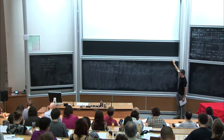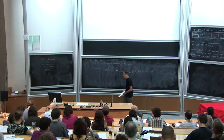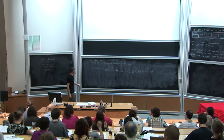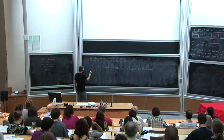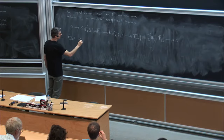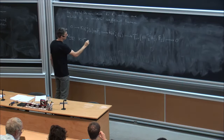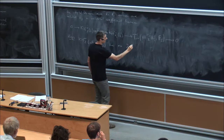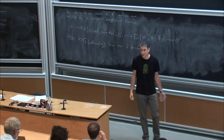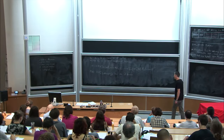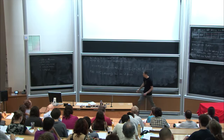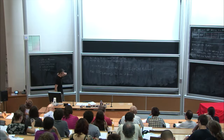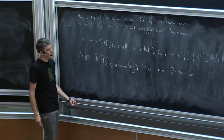One result worth stating is that the reduced integral Khovanov homology of alternating links doesn't have any 2-torsion. I say that to hammer home the point that having a lot of 2-torsion is really a phenomenon of the unreduced theory rather than the reduced theory. The unreduced theory has a lot of 2-torsion. The proof is just by looking at the universal coefficient theorem.